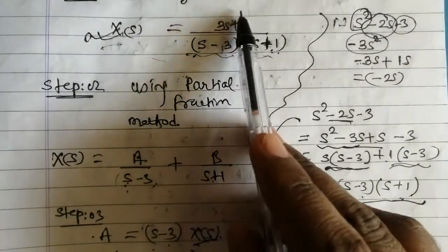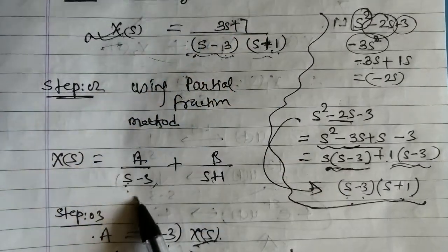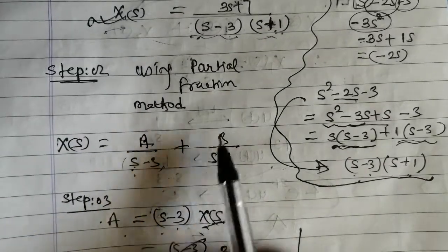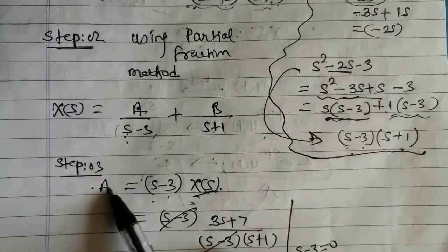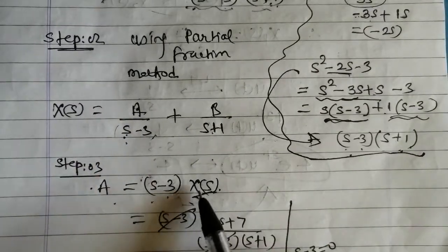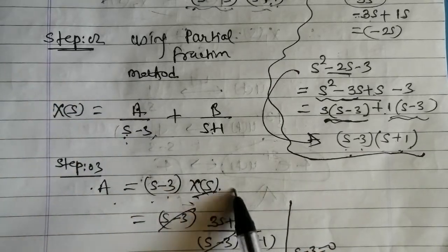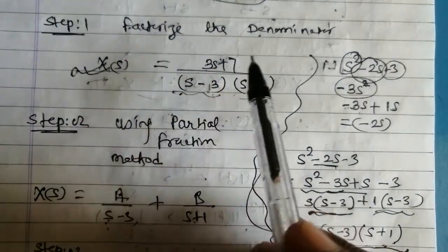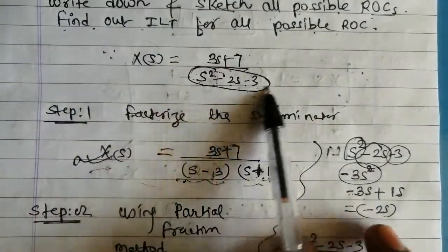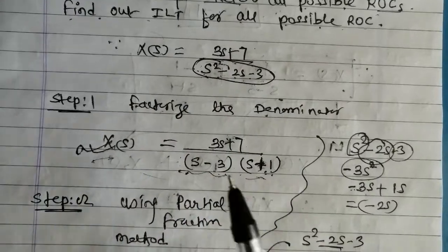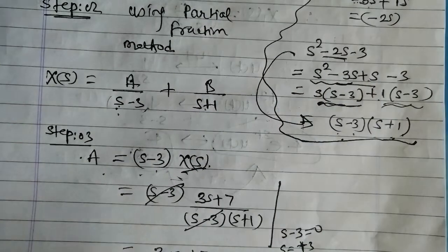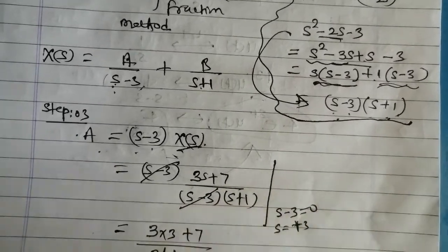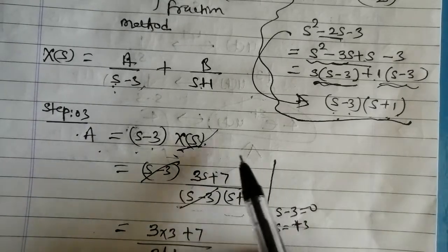As per the partial fraction method, we write X(s) = A/(s-3) + B/(s+1). We will find the values of A and B. To find A, we multiply (s-3) with X(s). Since X(s) = (3s+7)/[(s-3)(s+1)], the (s-3) terms cancel out, which is why we write X(s) in factored form — it simplifies the calculation.